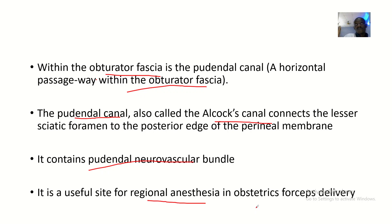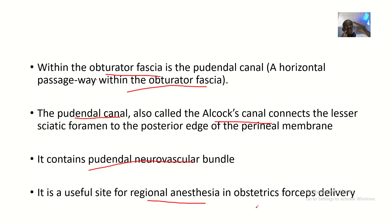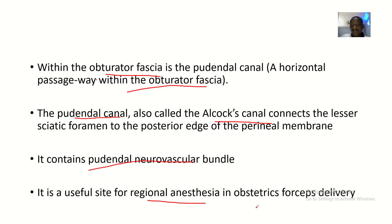Let me give you guys a tip on the pudendal nerve block. To perform a pudendal nerve block, you have to put your middle and index finger into the vagina, then you direct the needle near the ischial spine where you deposit the anesthesia. From there you anesthetize the pudendal nerve — that's all along where the pudendal canal is.